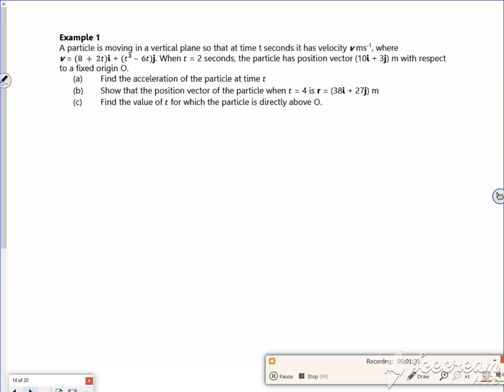Right. So then it says a particle is moving in a vertical plane, so that at time 2 seconds it has a velocity v, where v is 8 plus 2t, i, t cubed minus 6t. If you look, the big difference here is that it's in terms of time, so it's got t's in it. Which means it varies with time. So we kind of know that it's one to use calculus with.